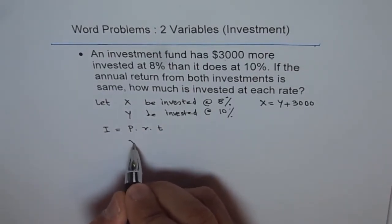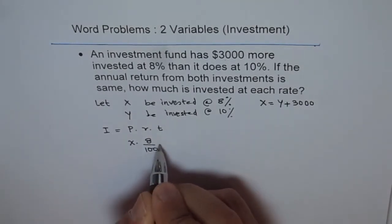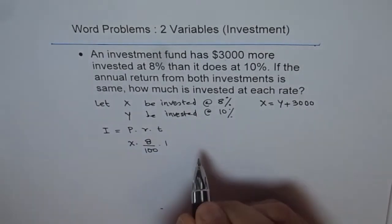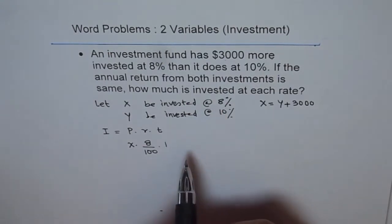X is the amount times rate 8%, that means 8 over 100 times T is 1 year, annual. This is from X amount invested at 8%.